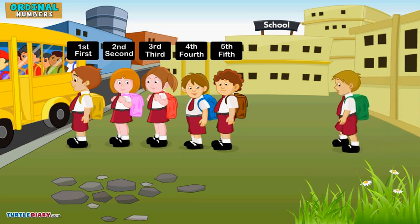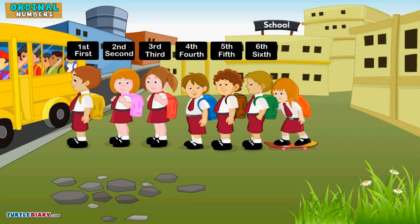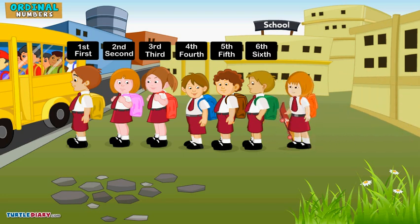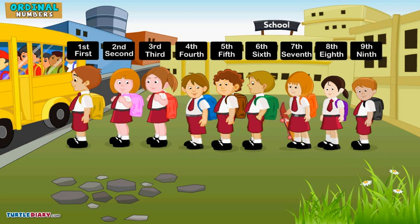The boy with the green bag is in the sixth position. The girl with the orange bag is in the seventh position. The girl with the purple bag is in the 8th position. The boy with the black bag is in the 9th position. The boy with the yellow bag is in the 10th position.